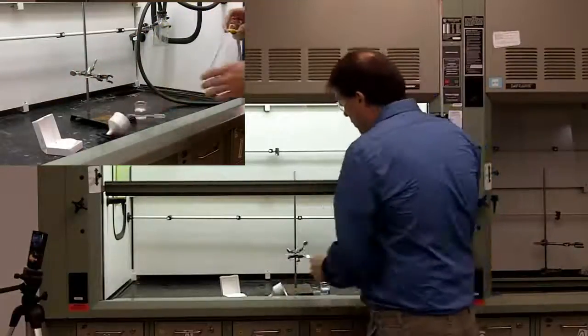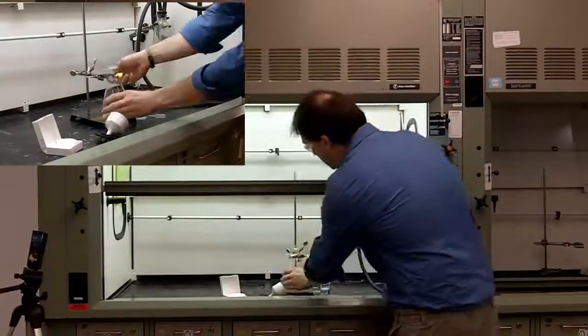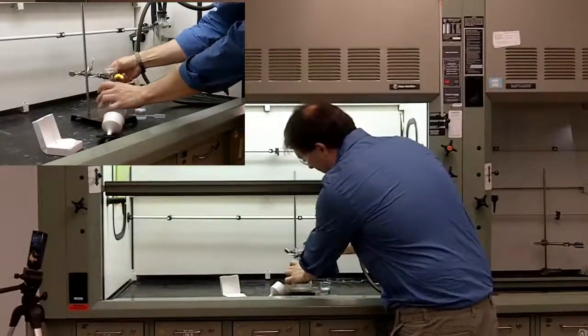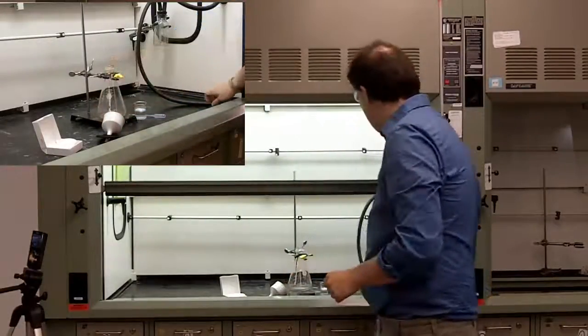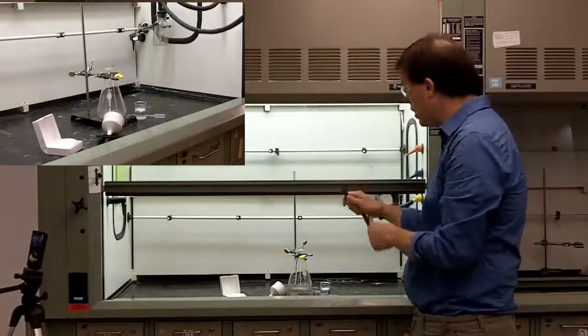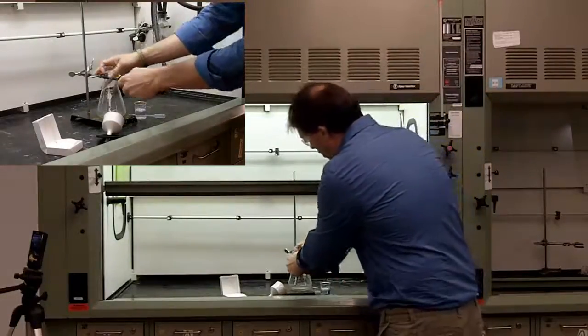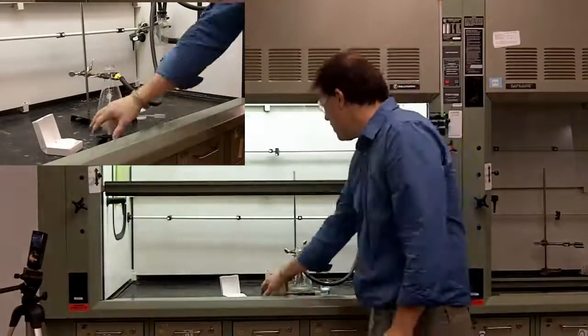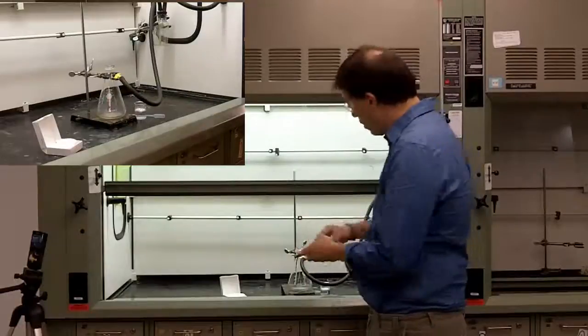So to set it up, it's relatively straightforward. You take your sidearm flask, put it inside of the three-prong clamp, take the end that is open here and attach it to the suction filtration flask like this.